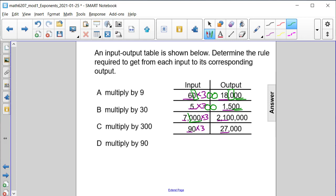7,000 has three zeros. So that accounts for the first three zeros in 2,100,000, leaving us with two remaining. So if we put 300 as the second factor, it does take care of these two extra zeros.